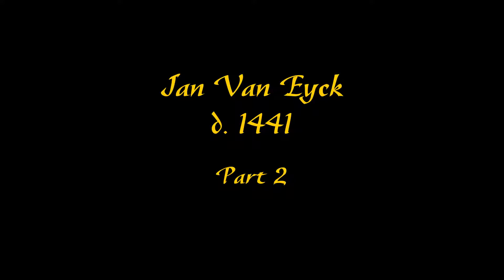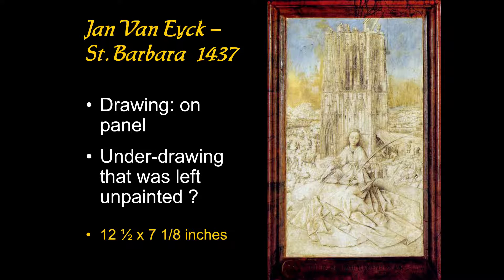This is the second part of our lecture on Jan van Eyck. Mostly we'll be seeing pictures of Madonna and some saints. The first image we're going to look at is not a painting — it's a drawing on panel. It's a little image of Saint Barbara, only slightly higher than 12 inches, in the museum in Antwerp.